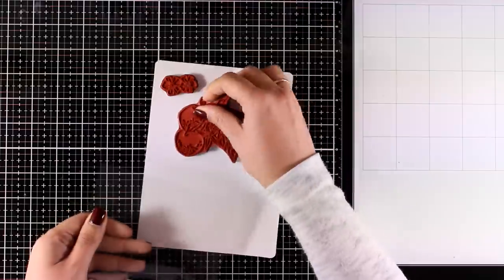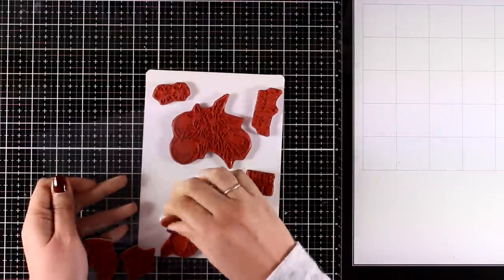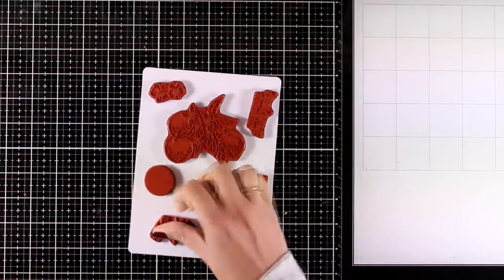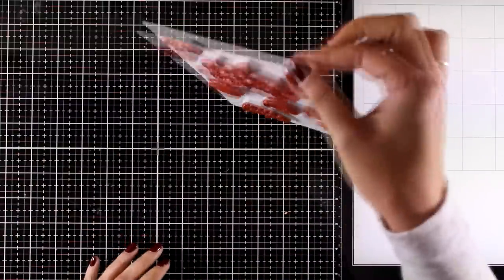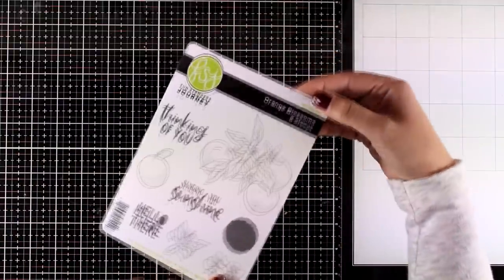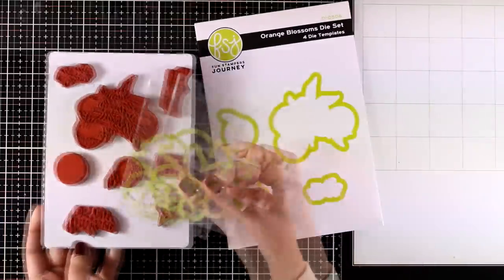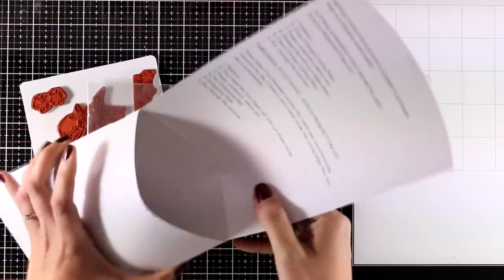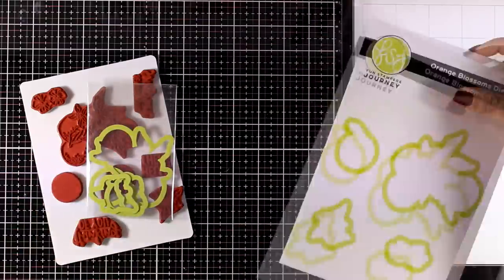One more thing that I like about this club is that it comes with an envelope, so it's really easy to store everything together. This white plastic comes with the packaging and everything clings nicely there, so I can store everything inside, both the stamps and the dies.